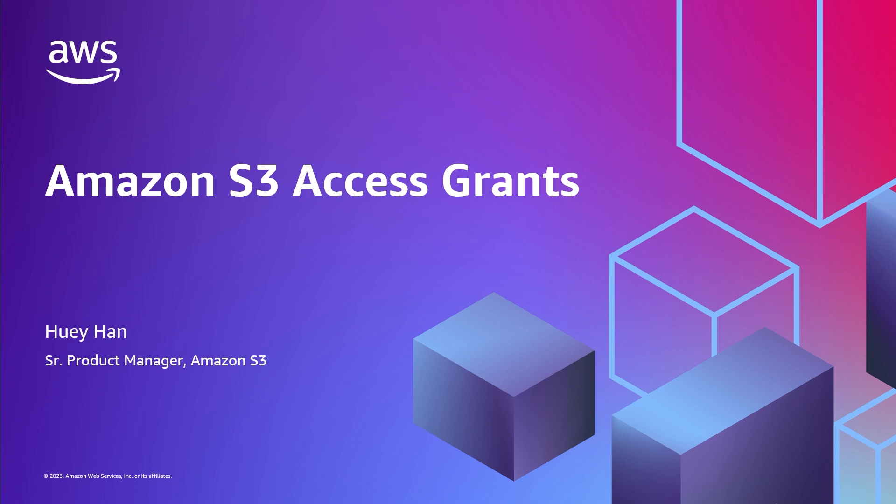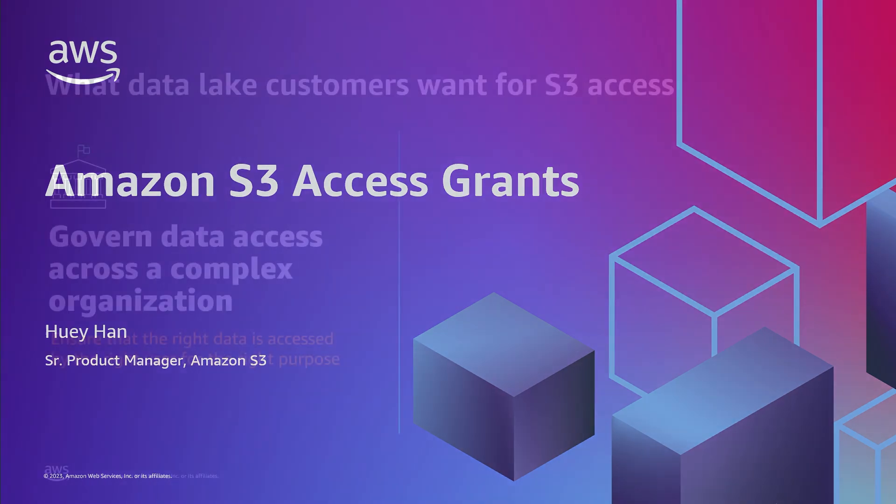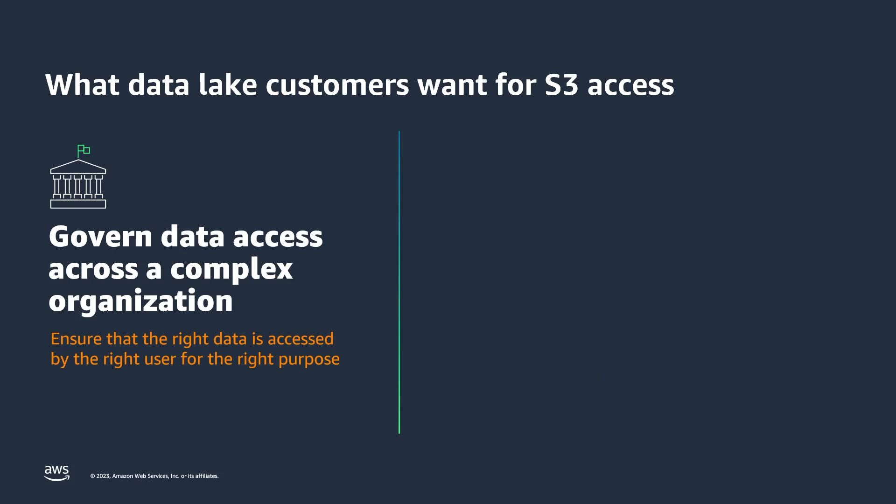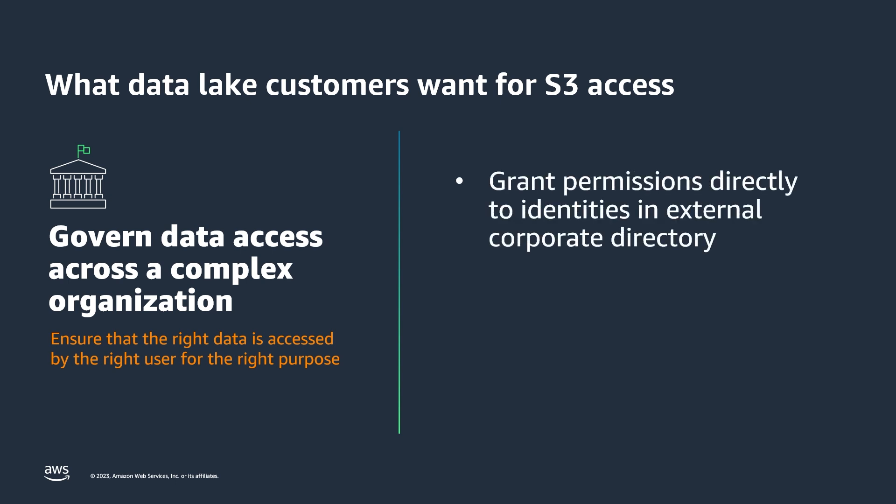To take a step back, when we talk to S3 customers, especially data-led customers, about what they want to govern their S3 data a little bit better, especially across a complex organization, they typically cite a couple of things. First is that customers want to grant permissions directly to identities in an external corporate directory. For this kind of data lake and analytics workloads, where it's not just applications accessing your data, it's data scientists and data engineers whose identities are usually corporate identities — for example, Active Directory users and groups, Okta users and groups — and customers want to grant S3 permission directly to those identities.